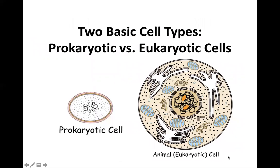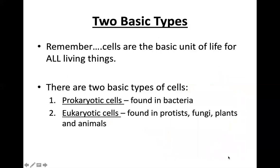We have two basic types of cells: the prokaryotic cell and the eukaryotic cell. As you can distinguish from the two figures in front of you, the eukaryotic is an animal cell — it is way bigger and way more complicated than a prokaryotic cell. In detail, prokaryotic cells are found usually in bacteria, but not only in bacteria. Eukaryotic cells are found in humans and animals, but not only — we can also find them in fungi, plants, and protists.